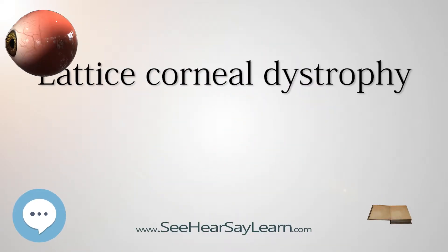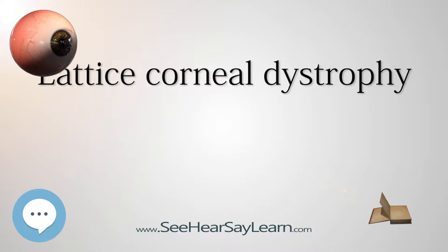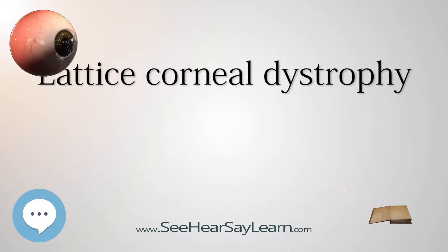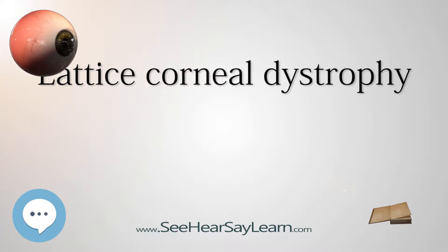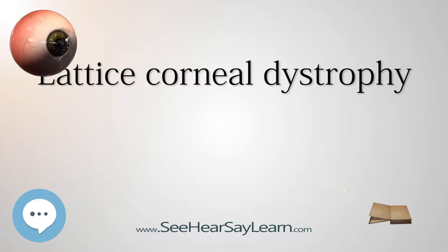Lattice corneal dystrophy type 1, also known as Biber-Hobb-Dimmer dystrophy, is a rare form of corneal dystrophy. It has no systemic manifestations, unlike the other type of the dystrophy, Lattice corneal dystrophy type 2.